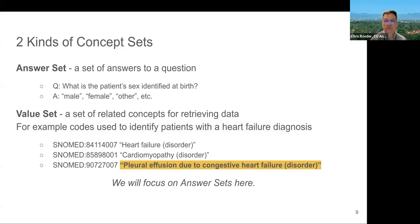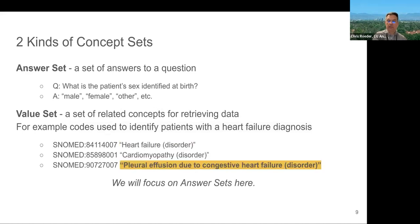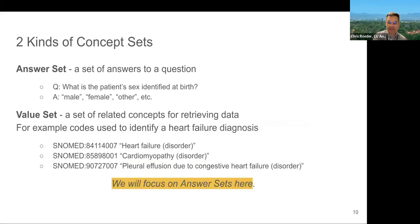So I can only assume that the reason this particular value set included that concept is that in evaluating this value set against a data set that's being queried, they found patients that weren't tagged with the first two concepts and found that they were able to retrieve them by using the pleural effusion one. This gets kind of confusing. I suspect it's out of scope, so we'll focus on answer sets.